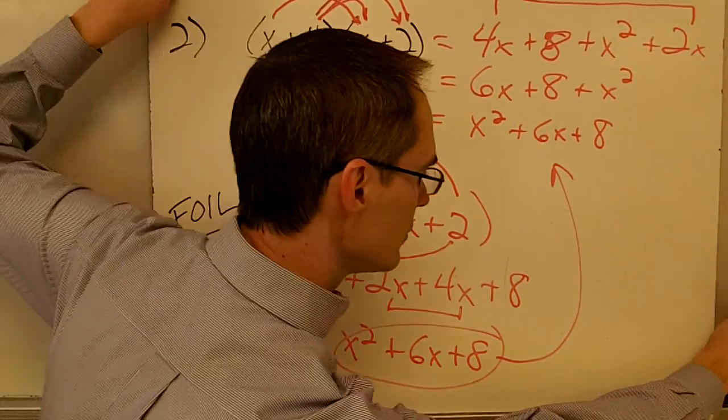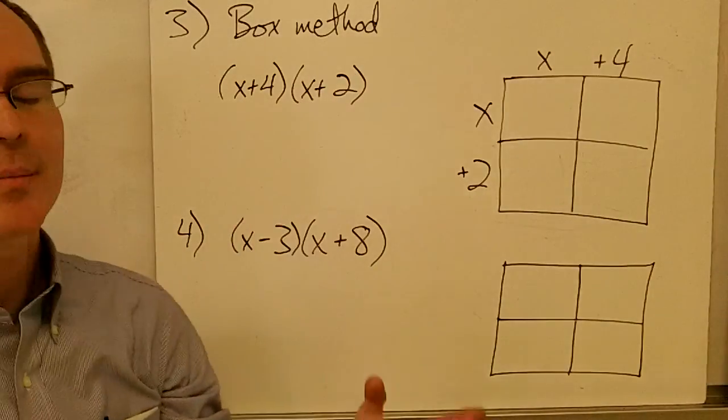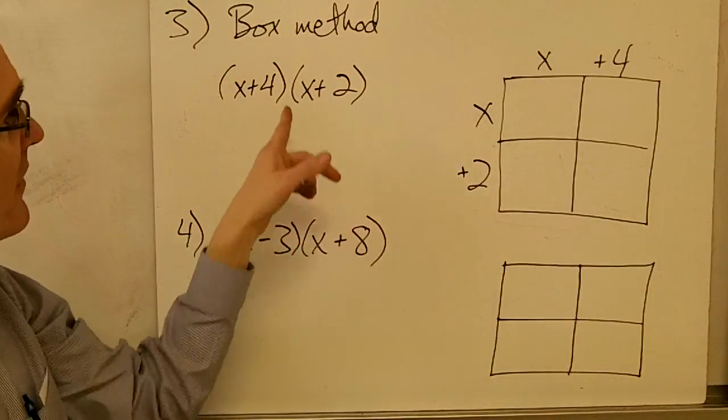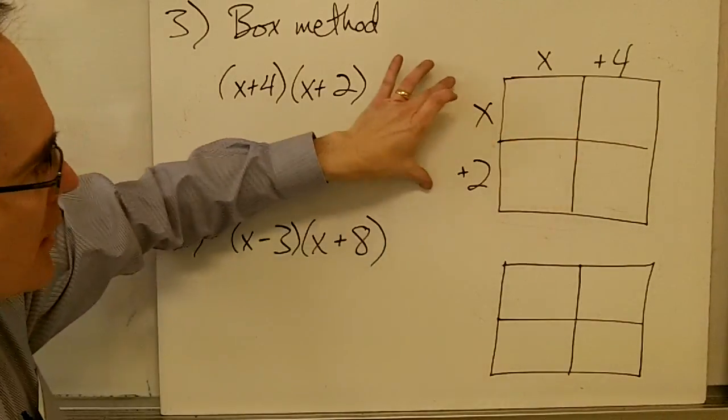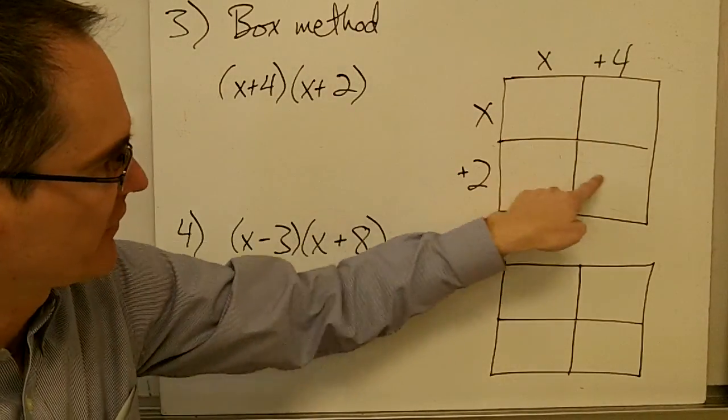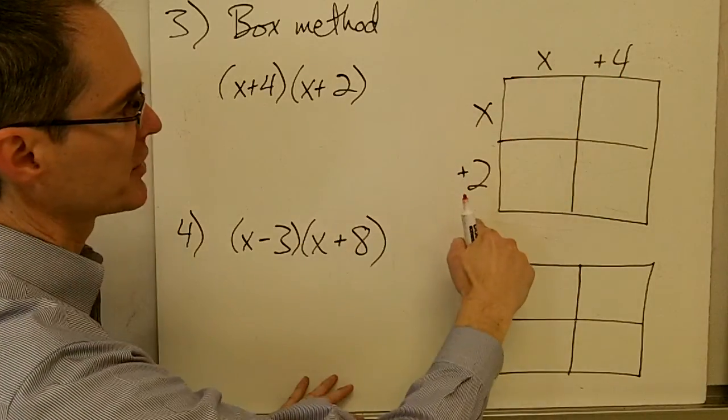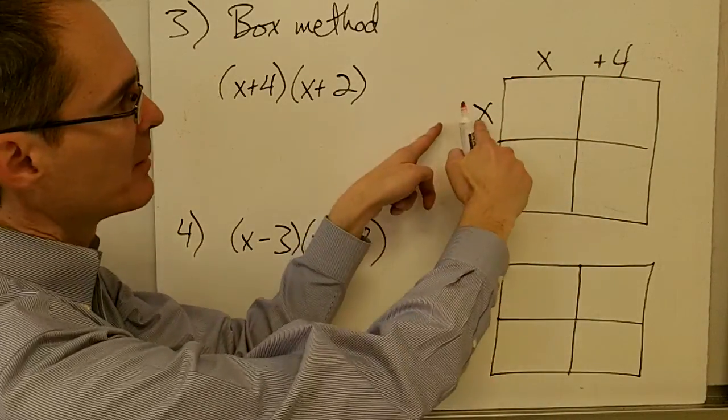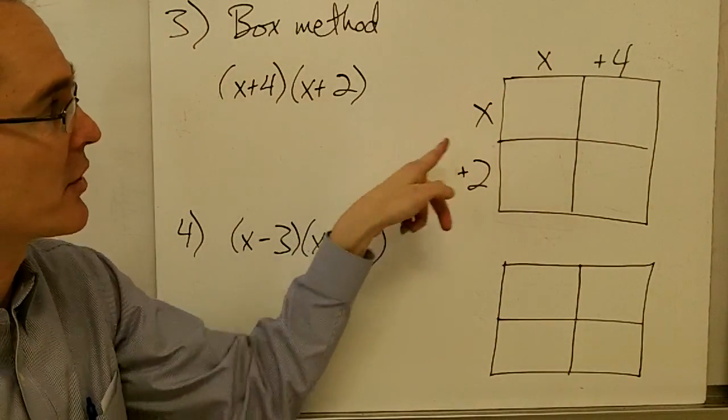Now, I can also do this same multiplication using something called the box method. And for the box method, you just take your two binomials, and you write them along the sides of this kind of four-paneled box here. So I'm going to put x plus 4 on the top and x plus 2 on the side. And then I'm going to fill in each one of these squares here with the product of each of my terms.